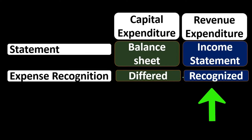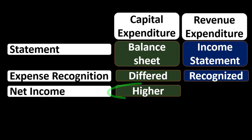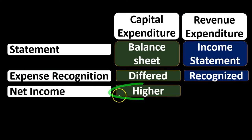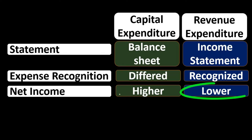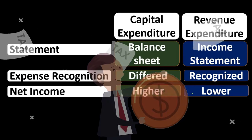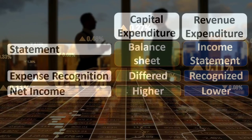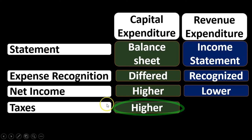If we want it to look worse — probably for taxes — we would want to recognize it as a revenue expenditure and expense it now, essentially taking a deduction, lowering net income, and therefore lowering taxes. Under the capital expenditure treatment, net income is higher in the year of the expenditure because we're not expensing it at the point of payment; we're putting it on the books as an asset. Under a revenue expenditure, net income is lower, which is preferable if we're trying to reduce taxes.